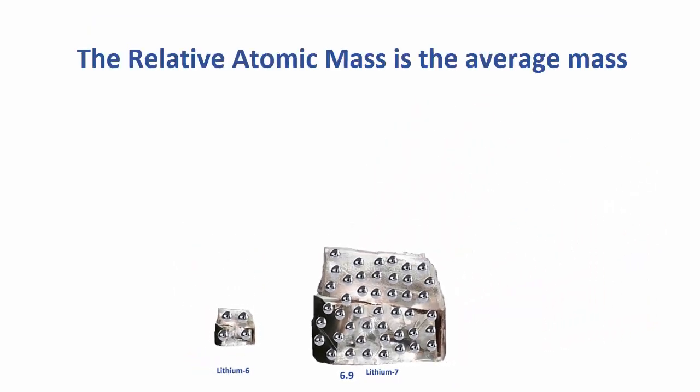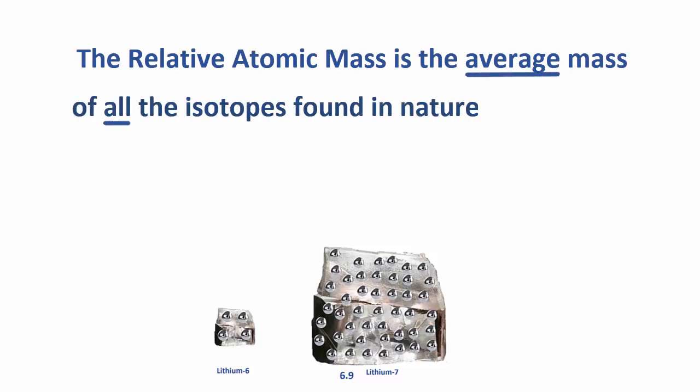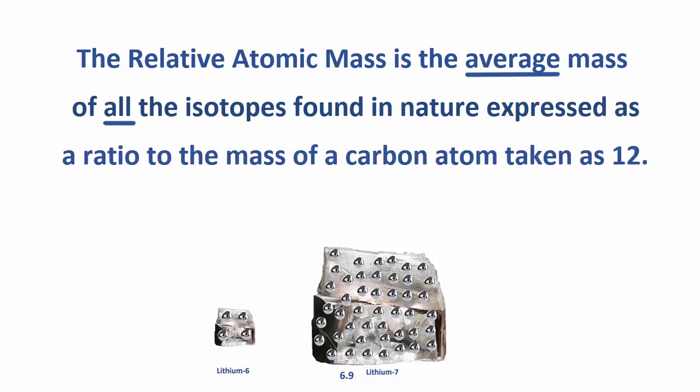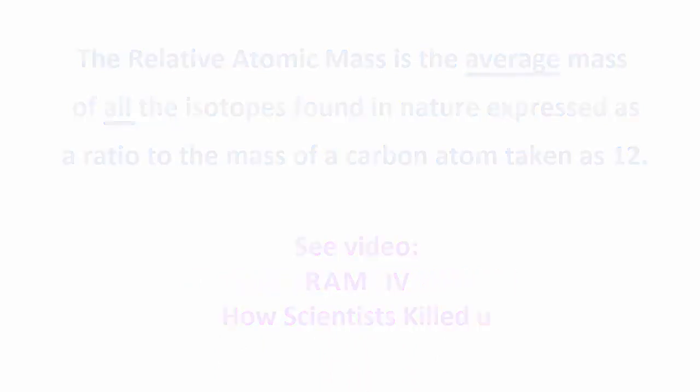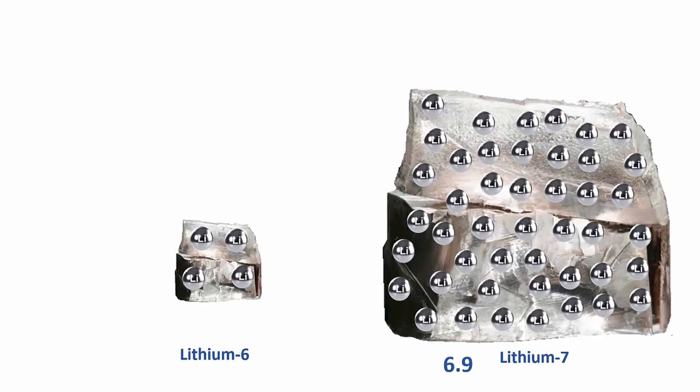The relative atomic mass is the average mass of all the isotopes found in nature. Expressed as a ratio to the mass of a carbon atom taken as 12. The idea of comparing the atom's mass to a carbon's is covered in the earlier video called Relative Atomic Mass 4. How scientists killed you. This definition of relative atomic mass also means that its value will be closer to the most common isotopes mass.